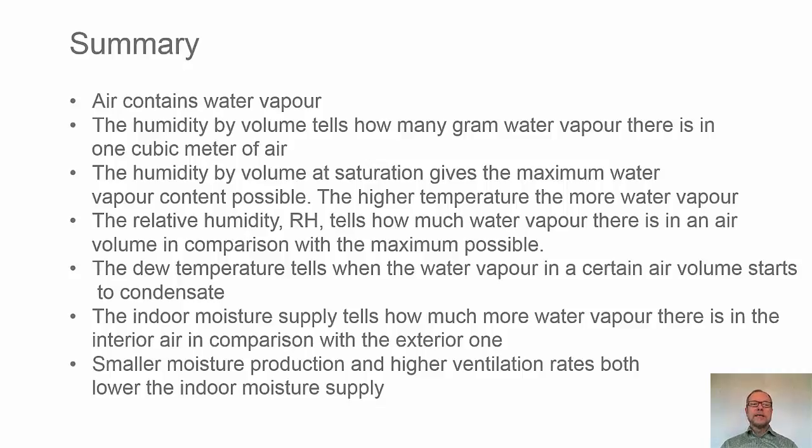Summary. Air contains water vapor. The humidity by volume tells how many grams water vapor there is in one cubic meter of air. The humidity by volume at saturation gives the maximum water vapor content possible. The higher temperature, the more water vapor. The relative humidity, RH, tells how much water vapor there is in an air volume in comparison with the maximum possible one. The dew temperature tells when the water vapor in a certain air volume starts to condensate. The indoor moisture supply tells how much more water vapor there is in the interior air in comparison with the exterior one. Smaller moisture production and higher ventilation rates both lower the indoor moisture supply.